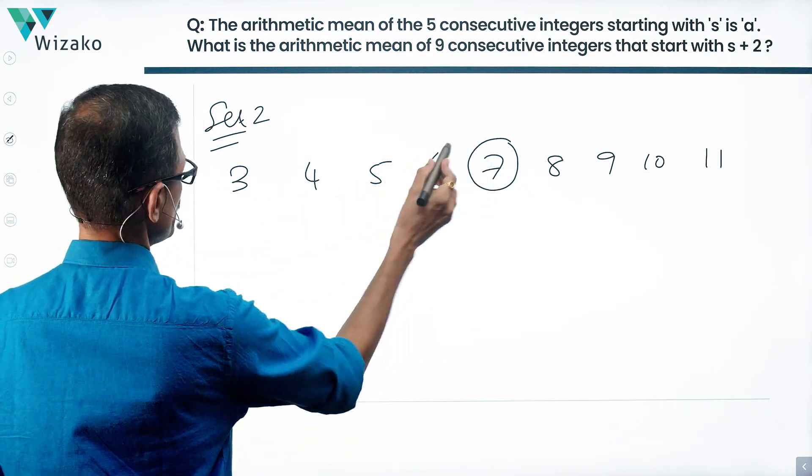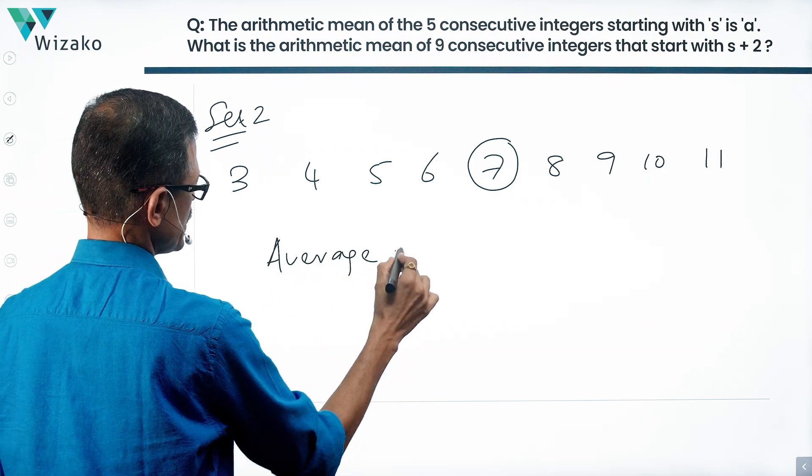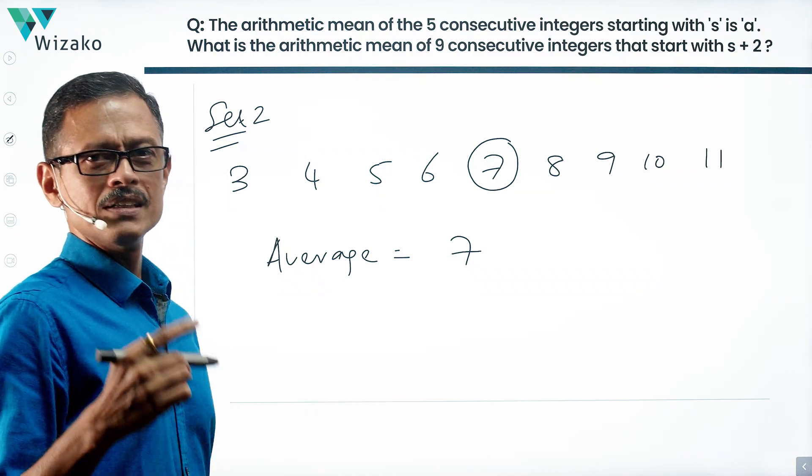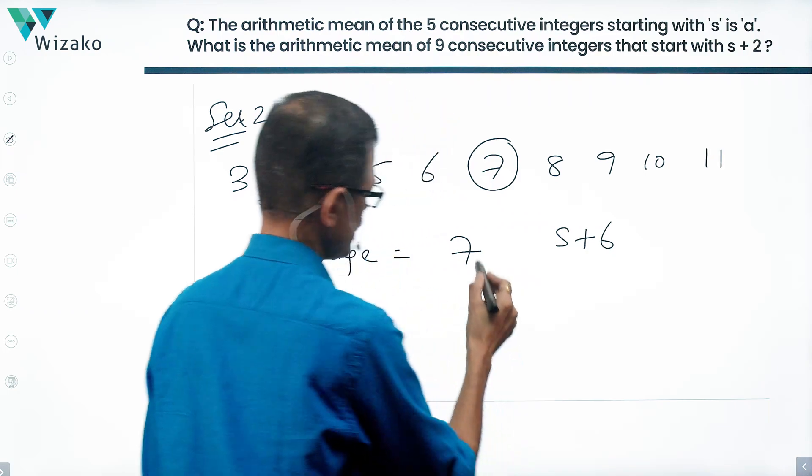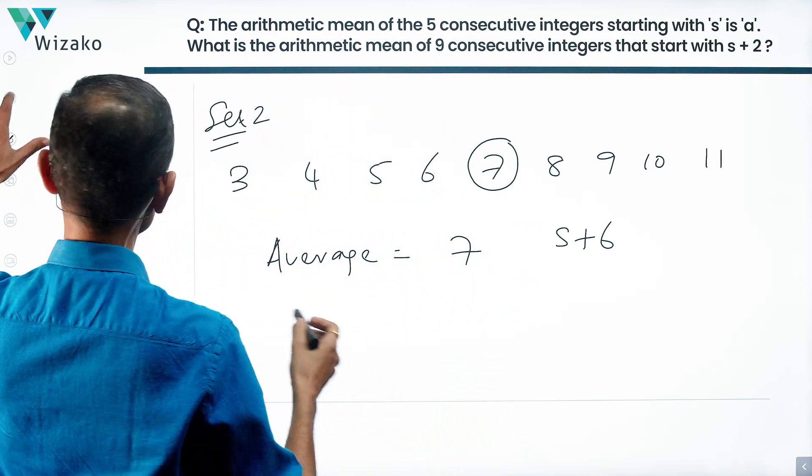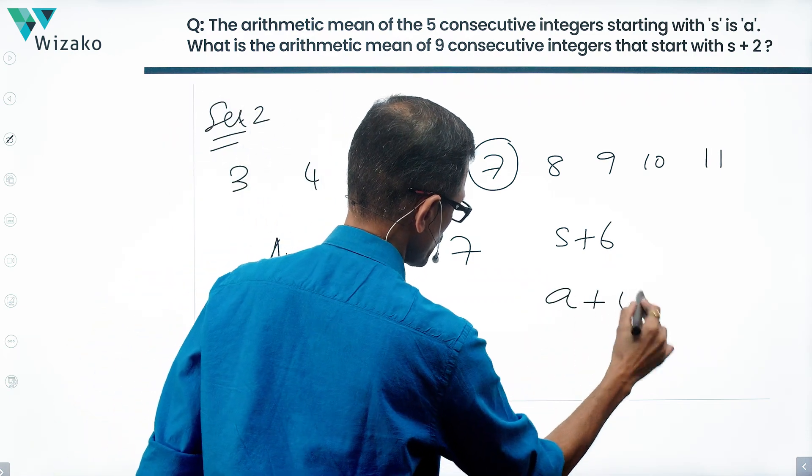Now let's check what we have. So 7 is the average of these numbers. 7 expressed in terms of S is going to be S plus 6. 7 expressed in terms of A—A equals 3—so this is going to be equal to A plus 4.